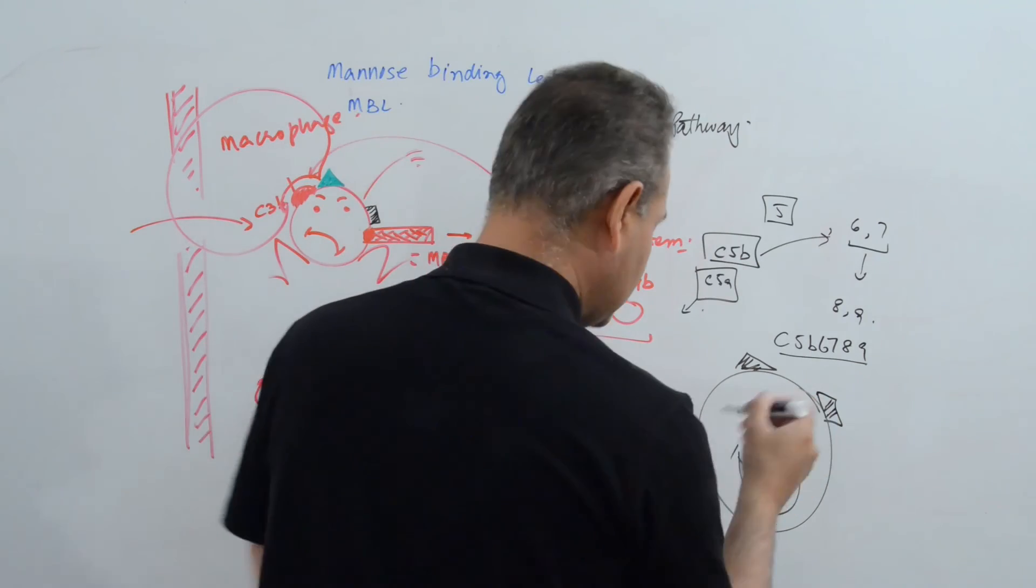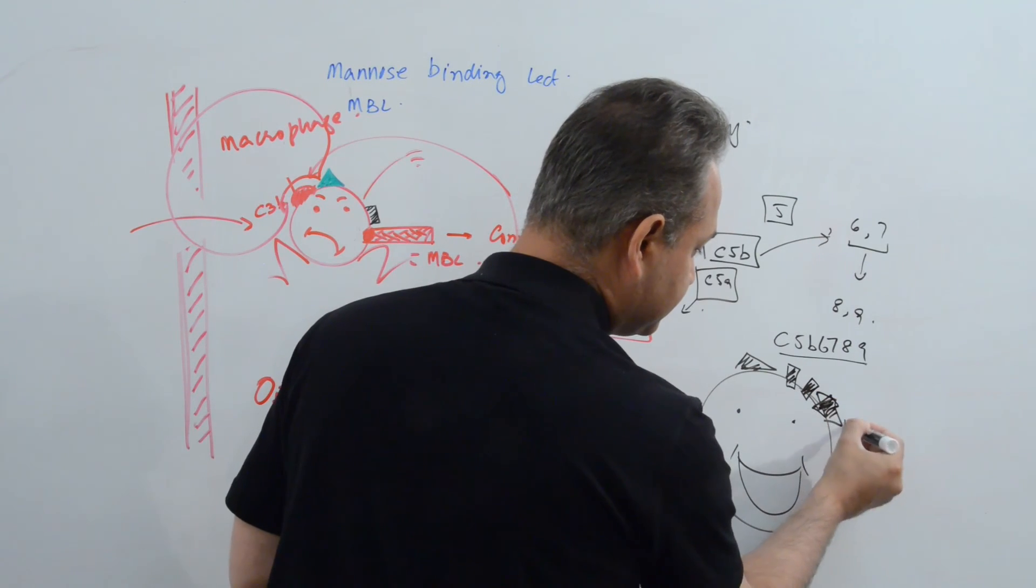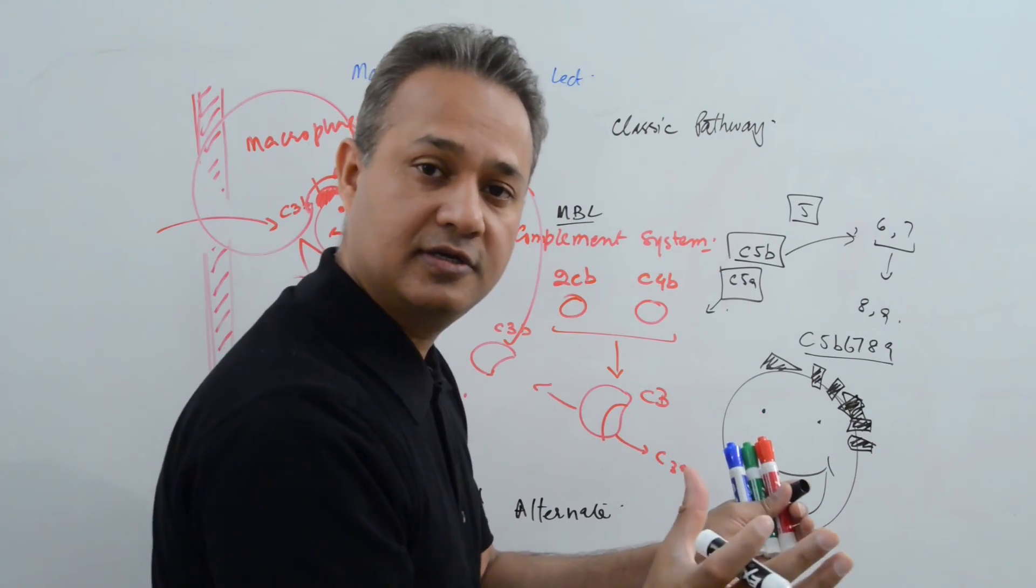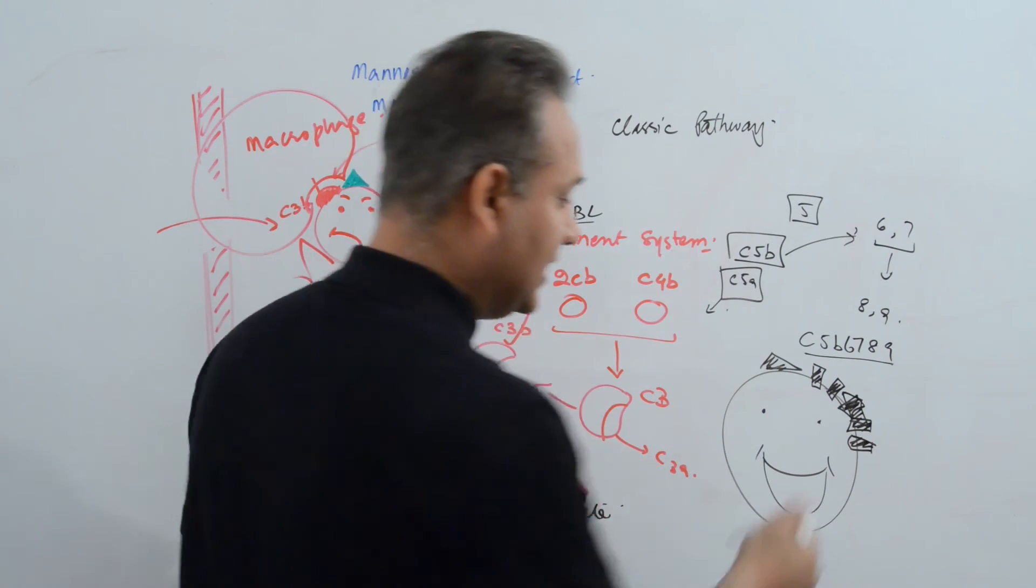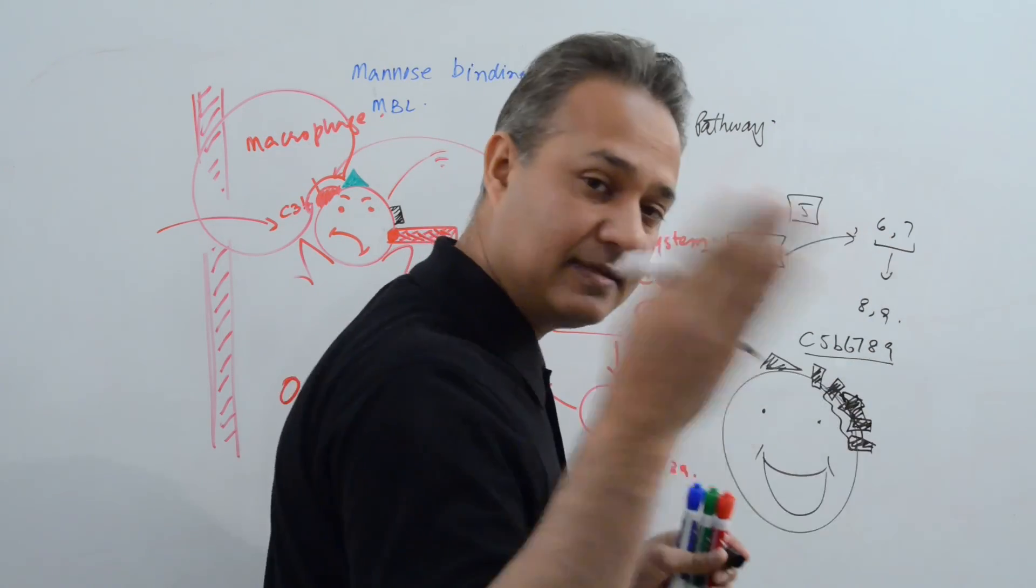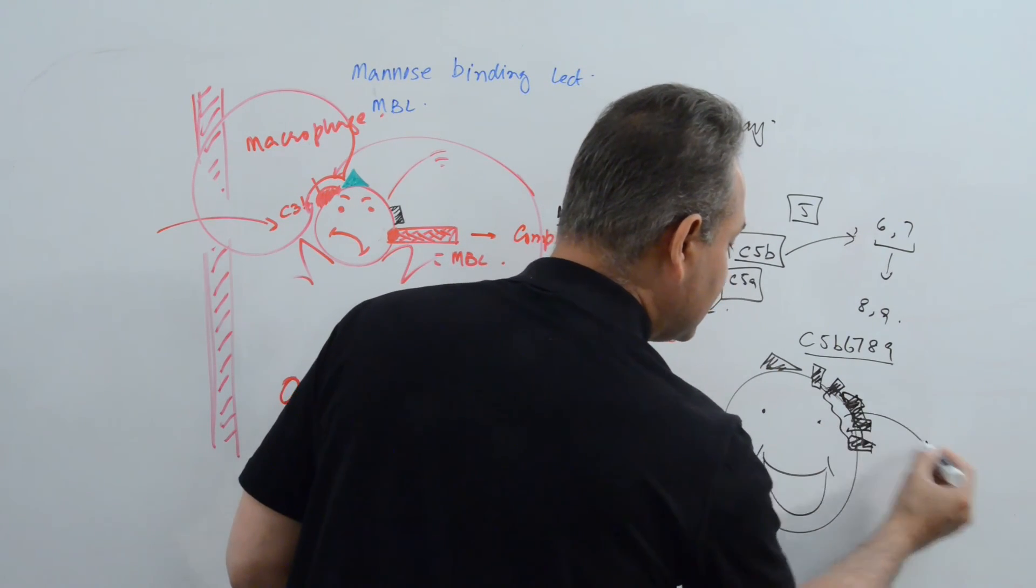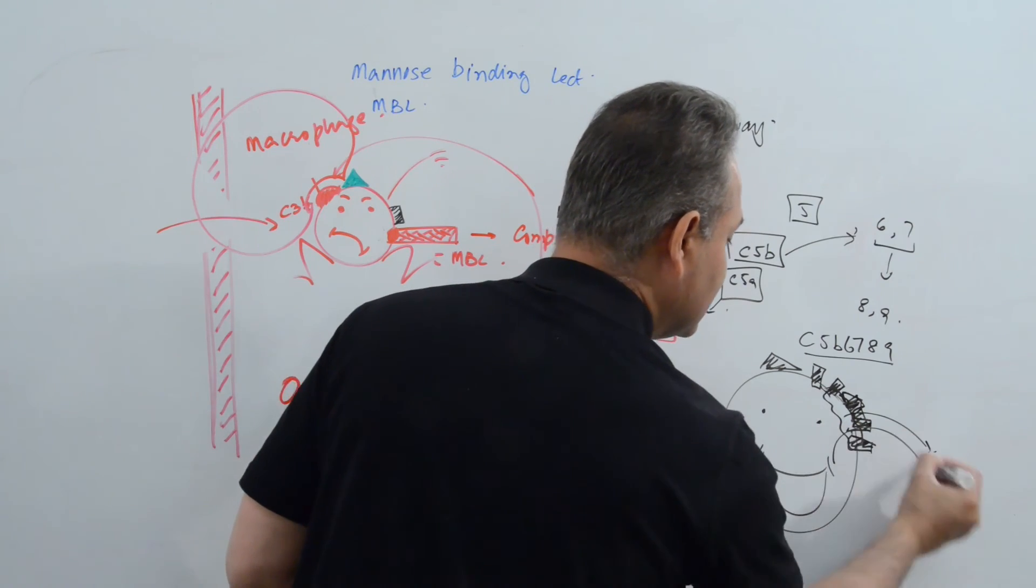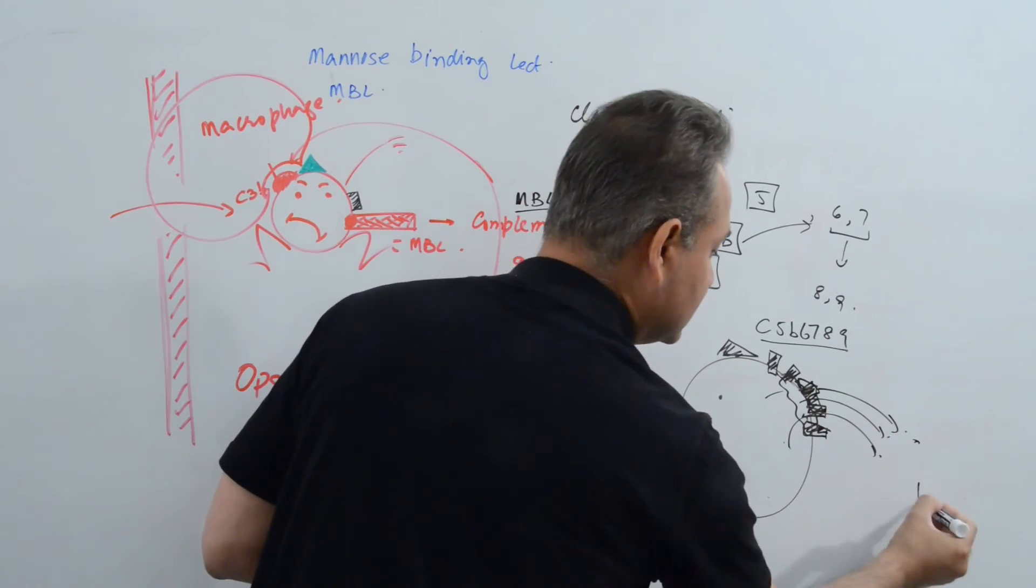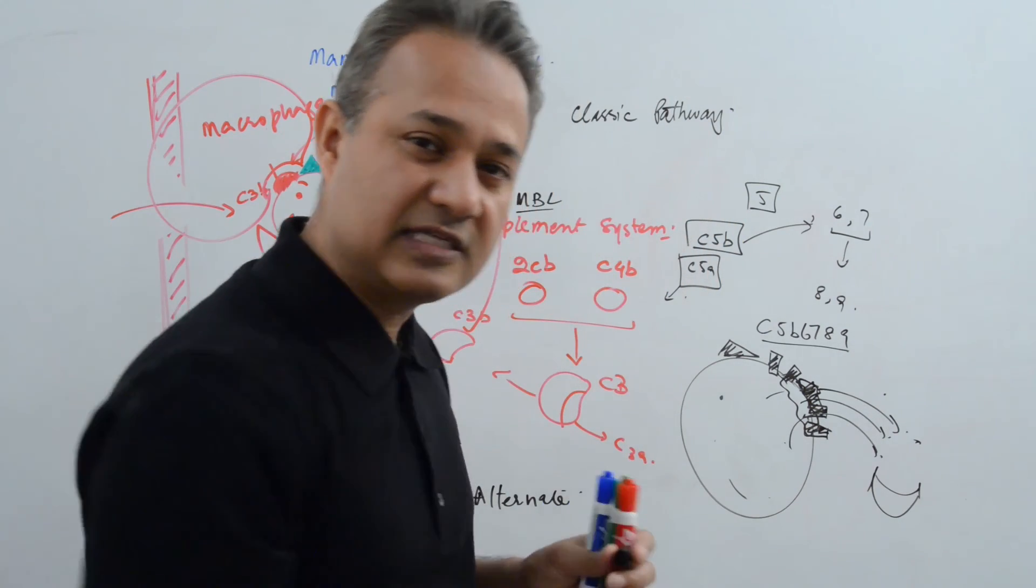What that is, is it sits on the surface of the pathogen and it punctures a hole in it. It is like a drill. It's like an arrow. It's like a bullet that punctures a hole into the surface. That is what it's called membrane attack complex. It attacks the membrane. So it sits down there and creates a hole. Once that hole is created, the pathogen or whatever is in there leaks out and the pathogen dies. The bacteria is really just dead.